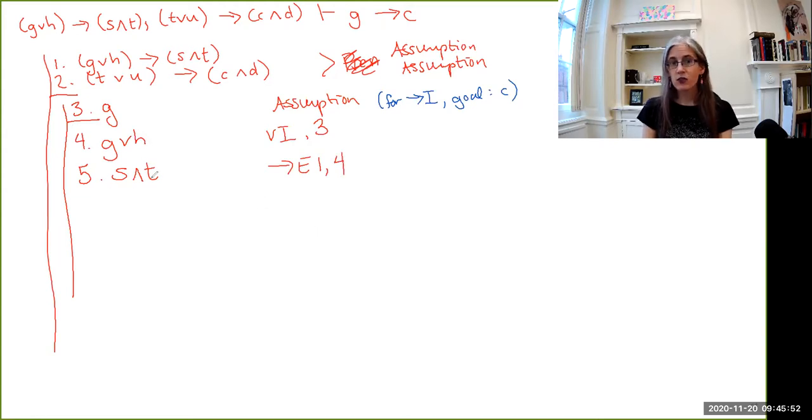Now, this is useful because we needed to have something involving T to get the antecedent of line two. Here we have T. We need to separate it from the rest of the formula, but conjunction elimination tells us that if you have a conjunction, you can write down one of the conjuncts. So there we have it. And then we can build this back up by adding U via disjunction introduction on line six.